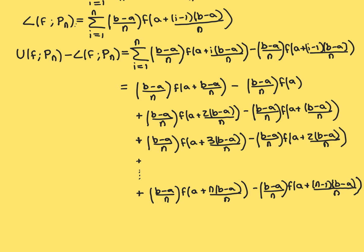I've written this out in full detail instead of using sigma notation. Starting with i equals 1, we get (b minus a)/n times f at (a + (b minus a)/n), minus (b minus a)/n times f at a. Then for i equals 2, we get plus (b minus a)/n times f at (a + 2(b minus a)/n), minus (b minus a)/n times f at (a + (b minus a)/n).